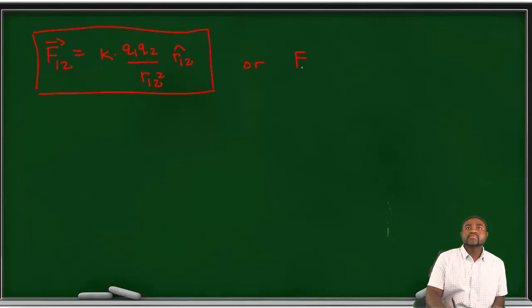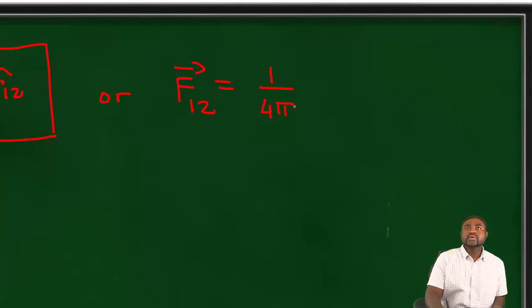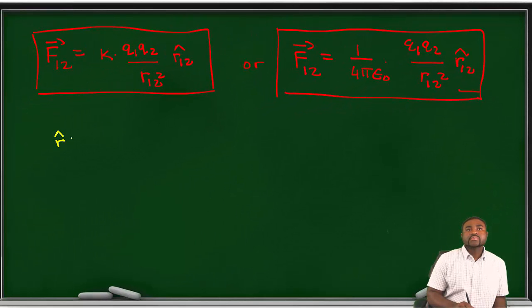So the vector form of Coulomb's law, therefore, can be written as F12 to be equal to K Q1 Q2 divided by R12 squared R12 hat, or F12 is equal to 1 over 4π epsilon naught Q1 Q2 divided by R12 squared R12 hat. Remember that R hat is equal to R12 bar divided by R12.